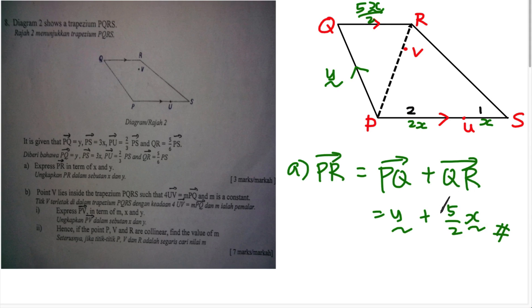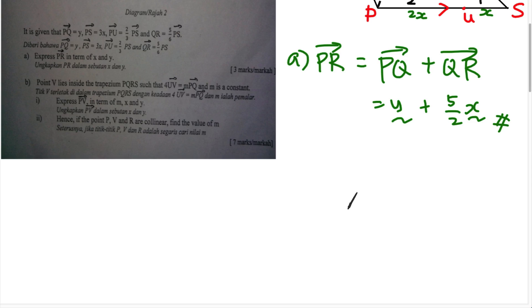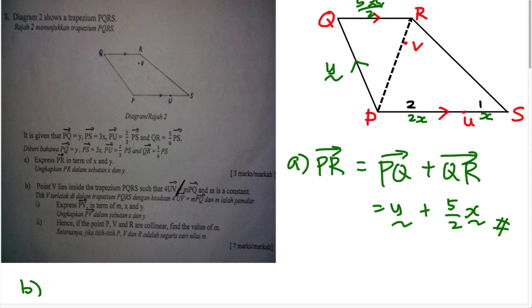Part B is more difficult — it's 7 marks. A point V lies inside the trapezium such that 4UV = m·PQ, where m is a constant. We need to express PV in terms of m, x, and y. Since this equation is key, I'll solve it first.